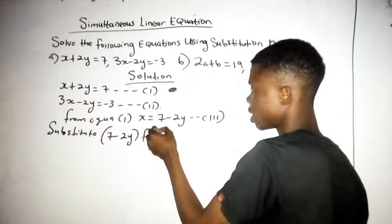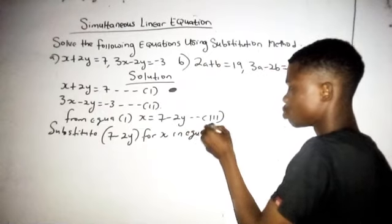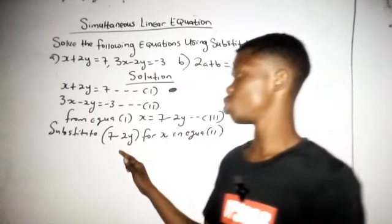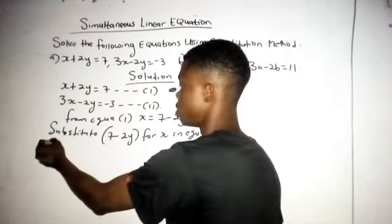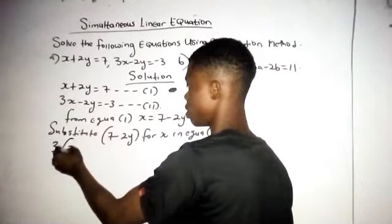Substitute 2y for x in equation 2. Now this is 7 minus 2y. This is x. I have 3 here. Here there is x. I will place 7 minus 2y here.